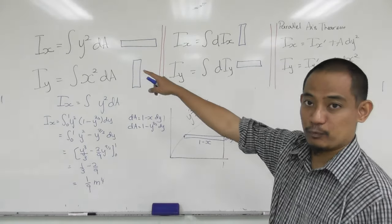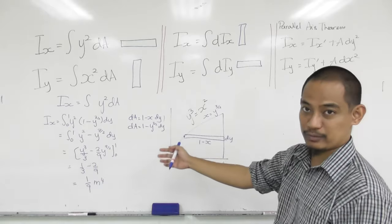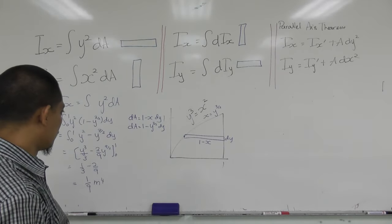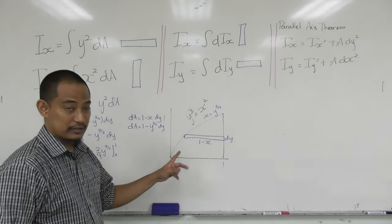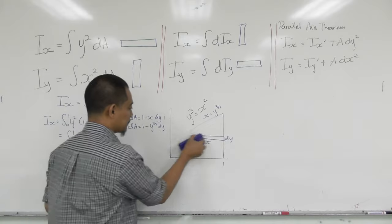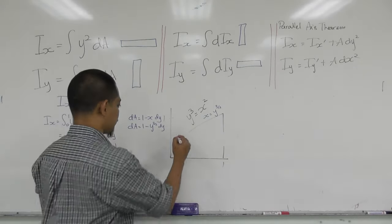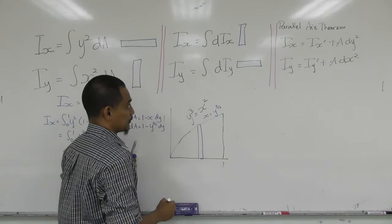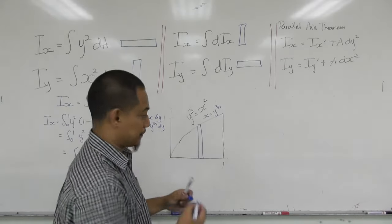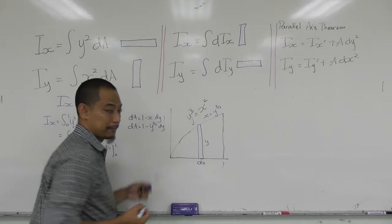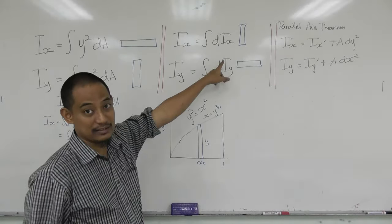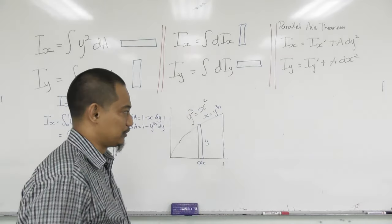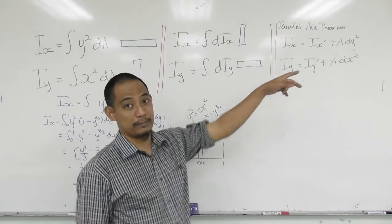That's how you find Iy for the first example. Using the horizontal element for Iy would be much more complicated because finding dIy about the y-axis using parallel axis theorem for a horizontal element involves an x-distance that makes the equation very difficult. So for Iy in this case, we stick with the vertical element approach.